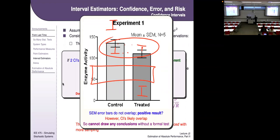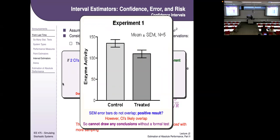The big takeaway: confidence intervals are generally twice the standard error. If there's a gap between confidence intervals, a two-sample test would reject the equality hypothesis. These are the types of analyses you'll need to do with your simulation output data.